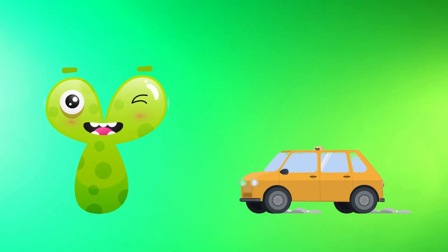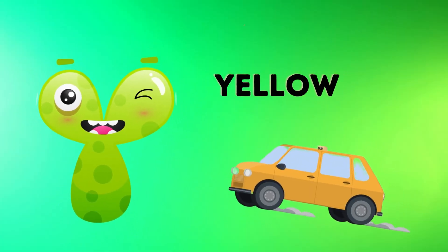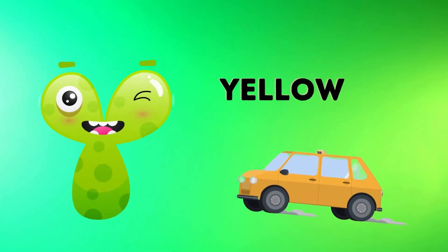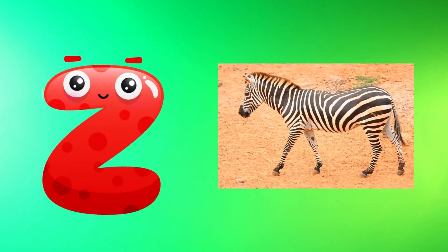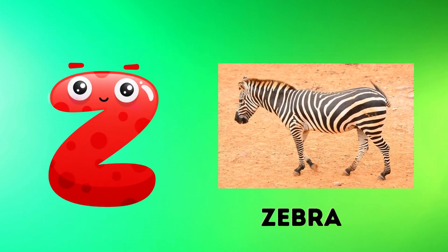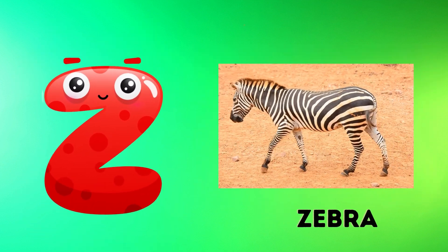Y is for yellow, y-y-yellow. Z is for zebra, z-z-zebra.